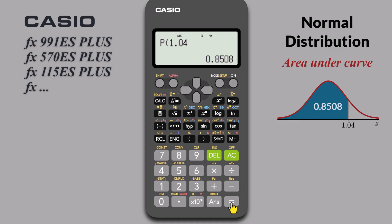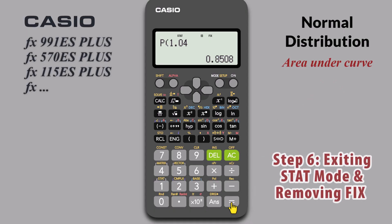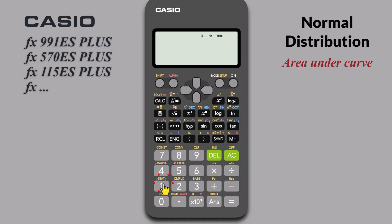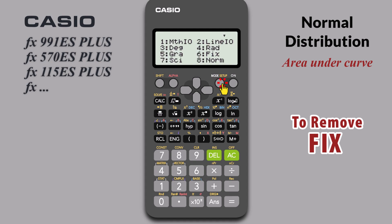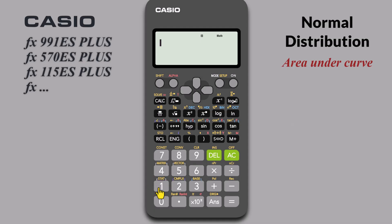When you're done with distribution calculations, here's how to return to normal operation. To exit the start mode, press MODE, then 1 for Comp. And finally, to remove FIX, press SHIFT MODE for Setup. Select 8 for Norm. Press 1. And the fixed number of decimal places is gone.